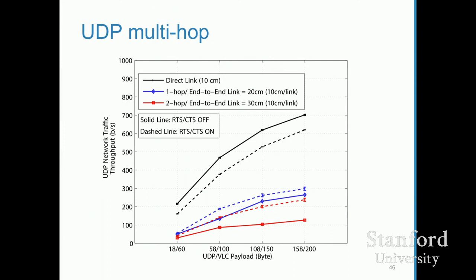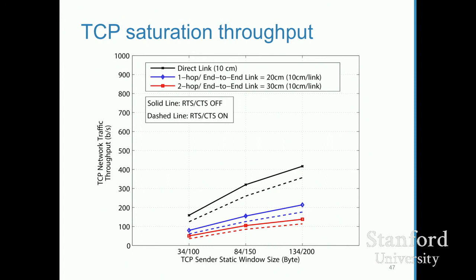Looking at UDP performance: if you skip RTS/CTS arbitration you get slightly higher throughput for one hop, but with multiple hops it's better to follow the protocol as in the wireless world. With 100 to 150 byte packets you can get up to 200 bits per second. You can also do TCP — performance drops a bit more but you have TCP's comfort. We have loaded web pages over that simple network.